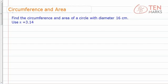In this video lesson, let's learn about the circumference and area of a circle. We're given one problem which says: find the circumference and area of a circle with diameter 16 centimeters. Use pi equals 3.14.